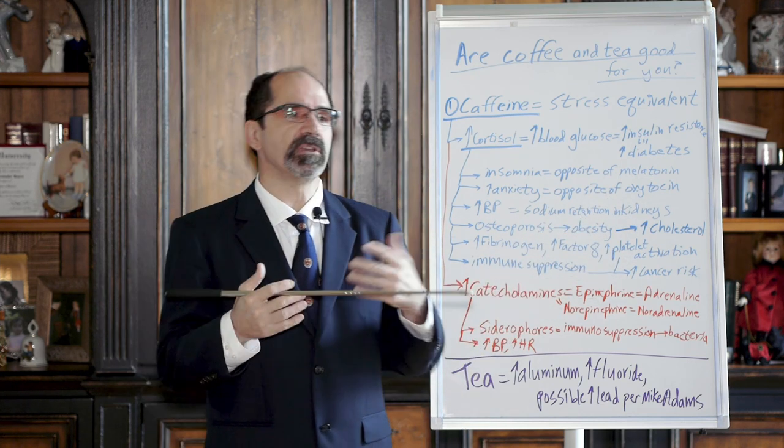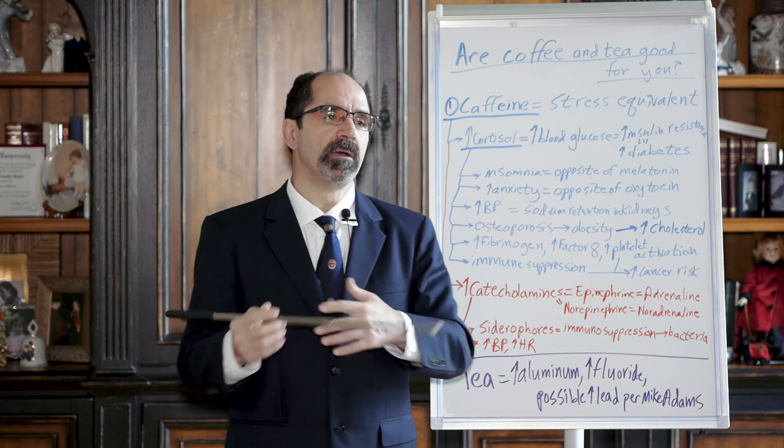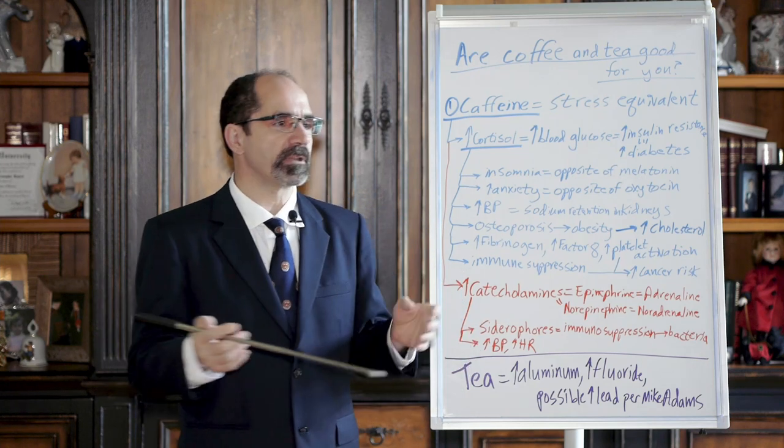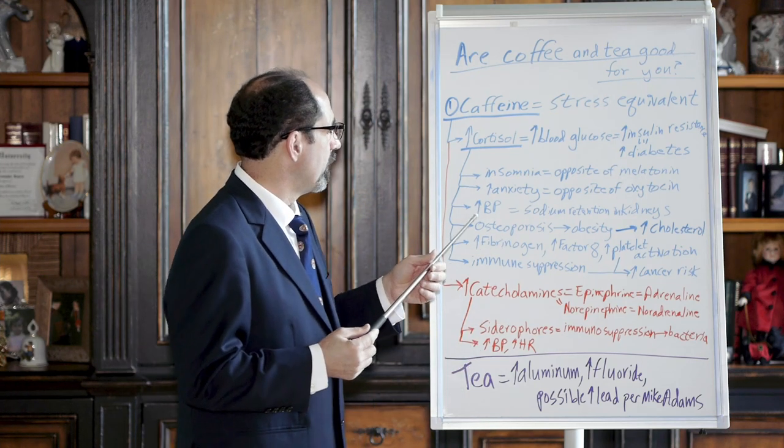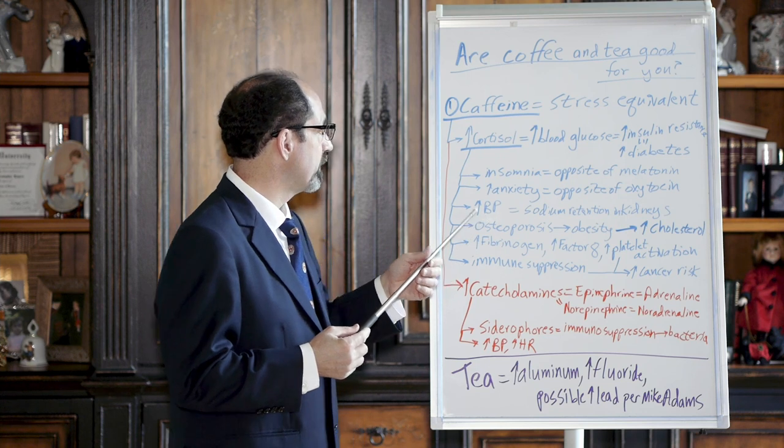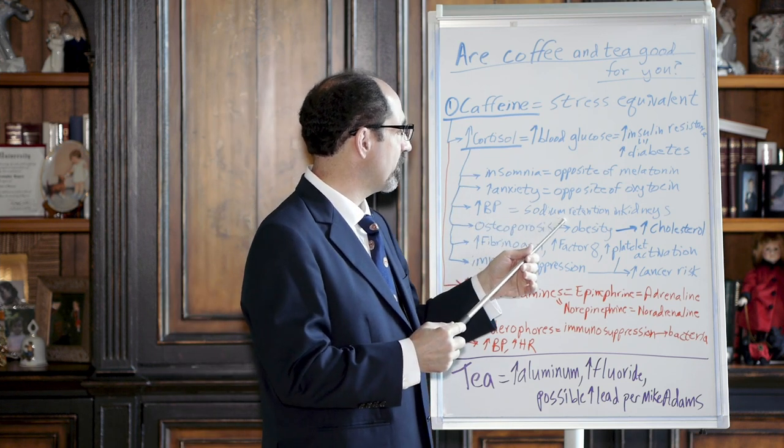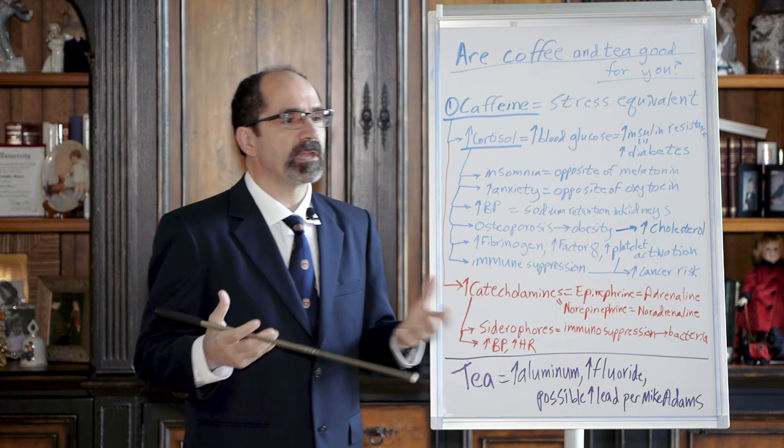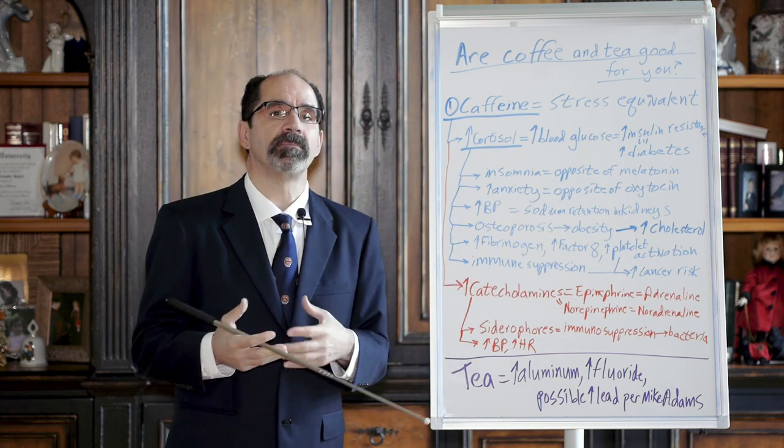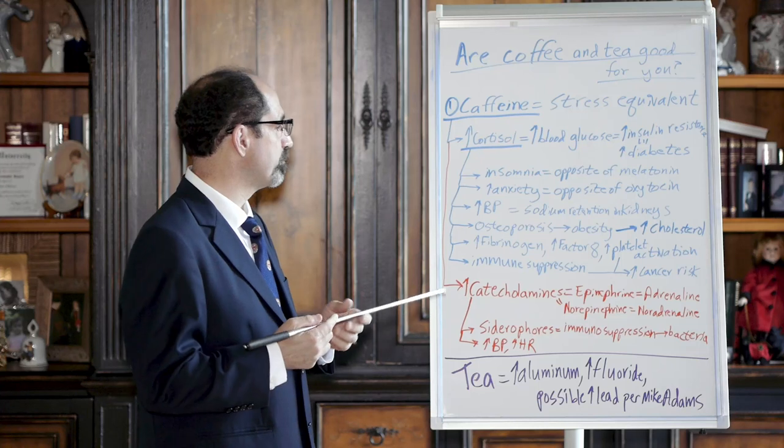Cortisol is sort of the opposite of oxytocin. Oxytocin is the love hormone. You feel safe. When baby's with mama, baby feels free to play and explore the environment. It will increase blood pressure. It has a bit of a mineralocorticoid activity whereby it causes sodium retention in the kidney, increasing the body's intravascular volume. And that will contribute to raising blood pressure.